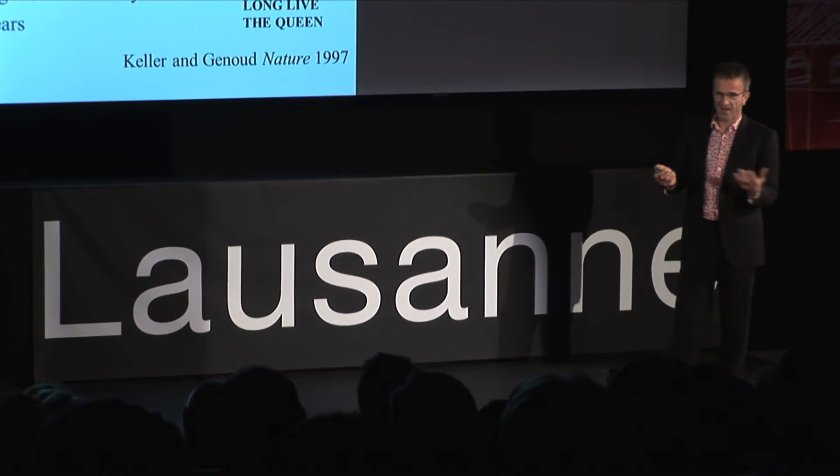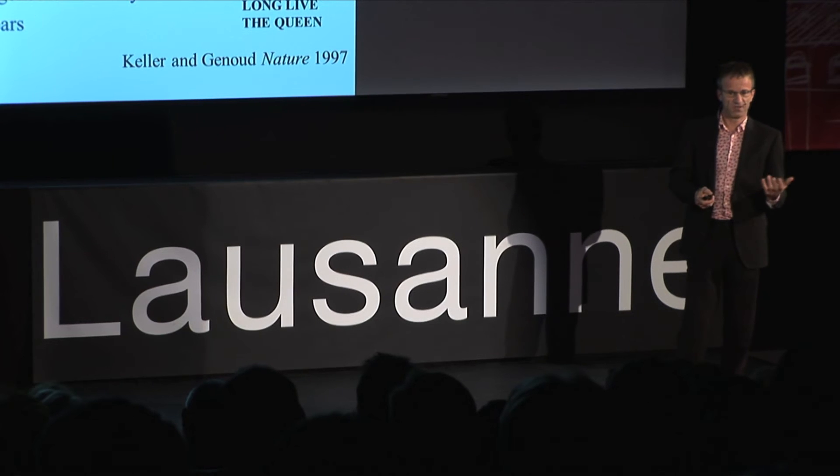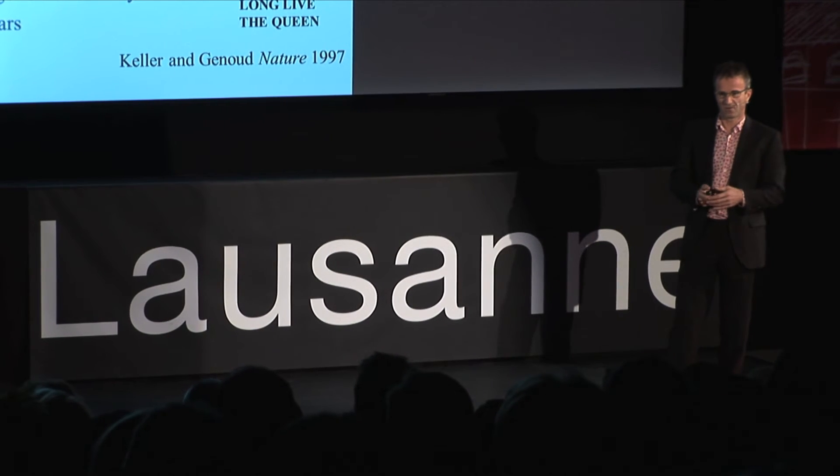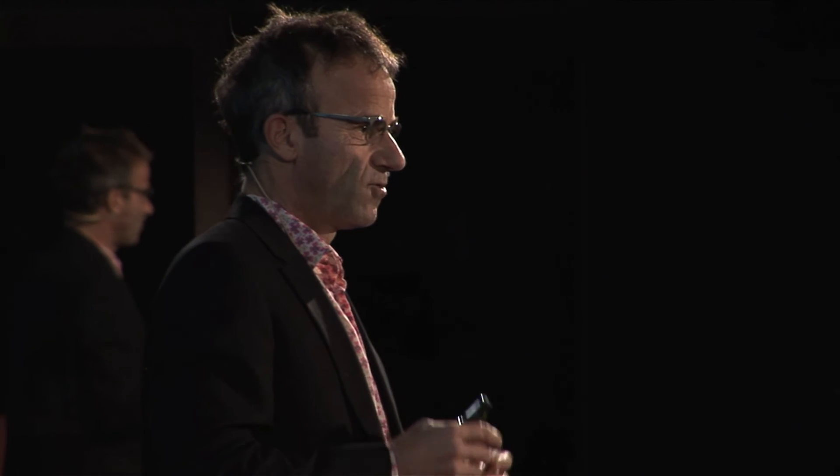It would be like finding a primate which lived 4,000 years — 100 times longer than other primates. What's very interesting is that queens and workers which have the same genome have a very different lifespan: workers live only 10 or 20 times less than the queens with the same genome. So it's a very good system to study the genetics of aging.